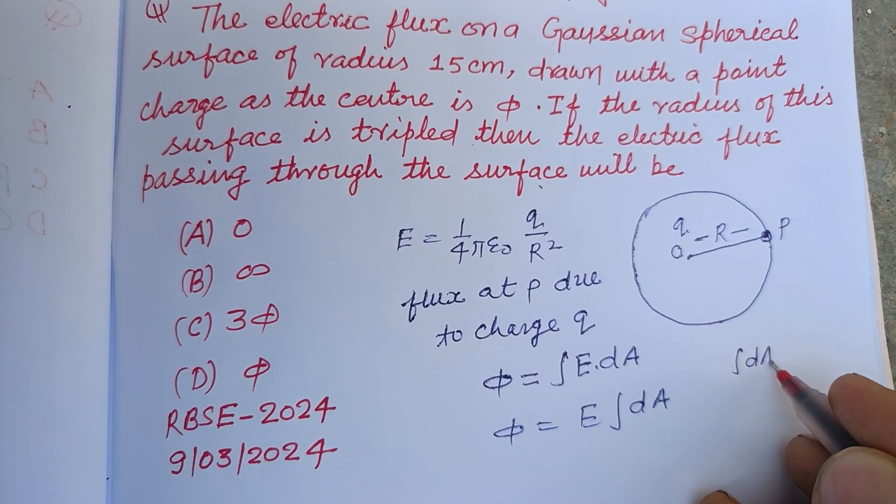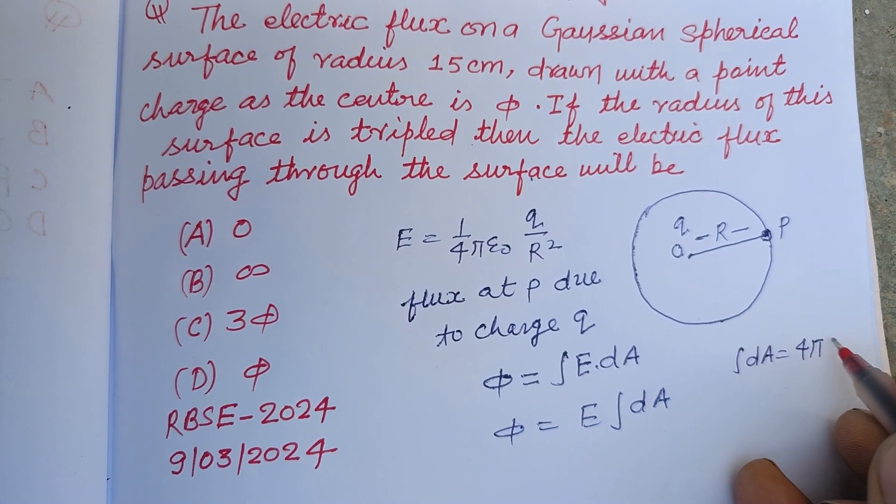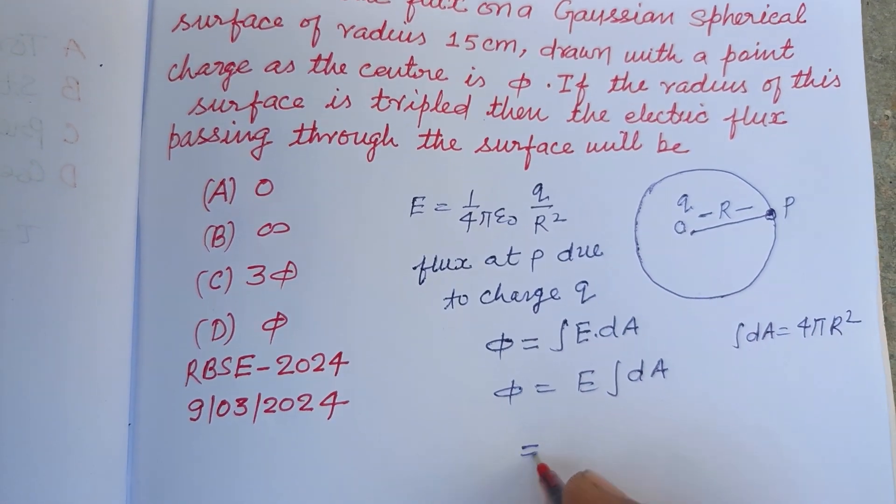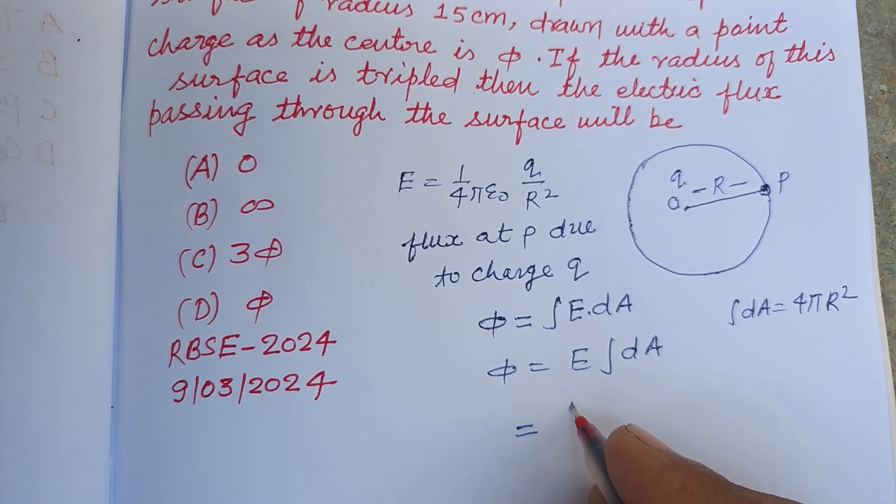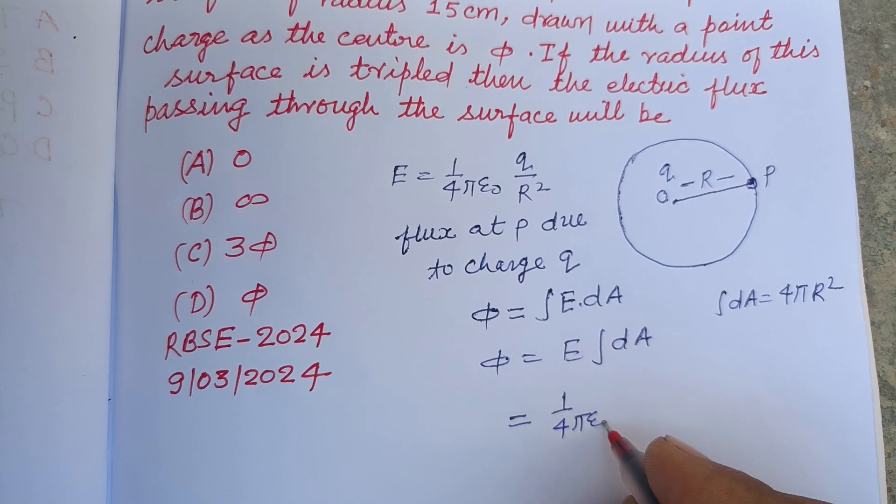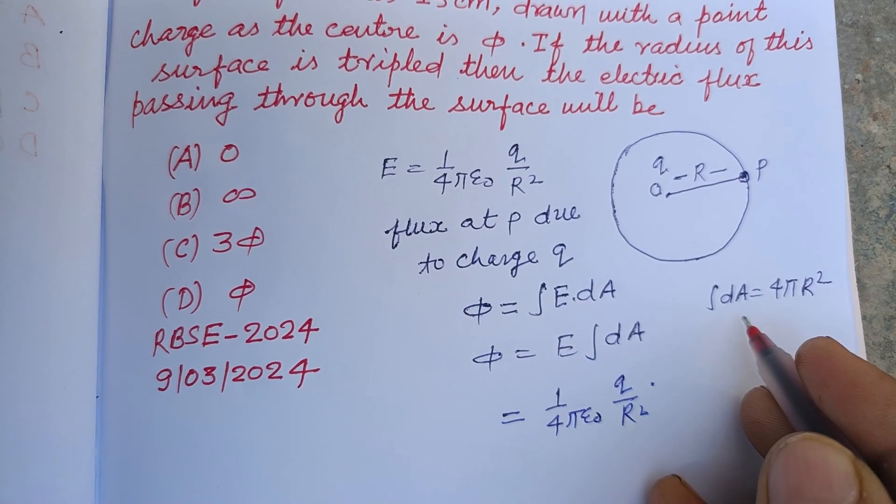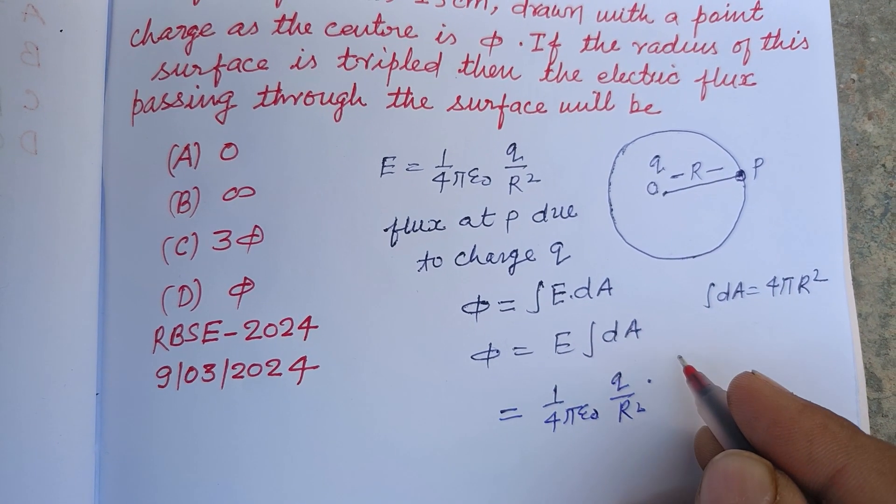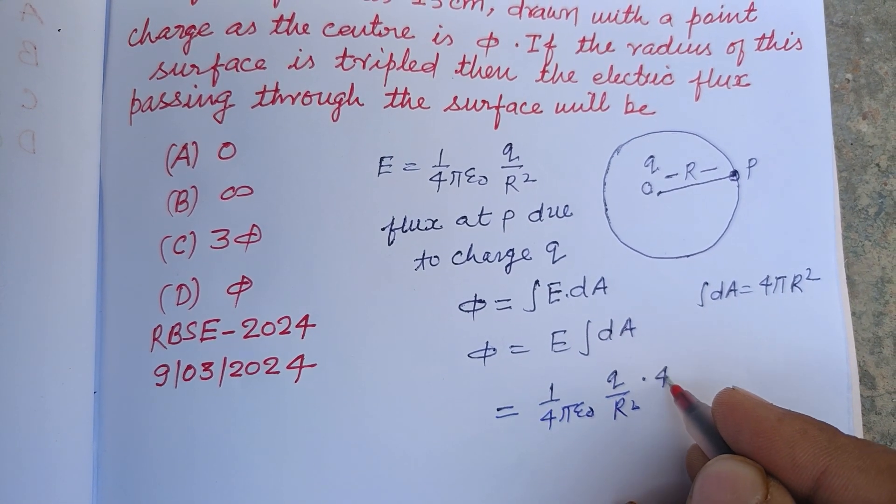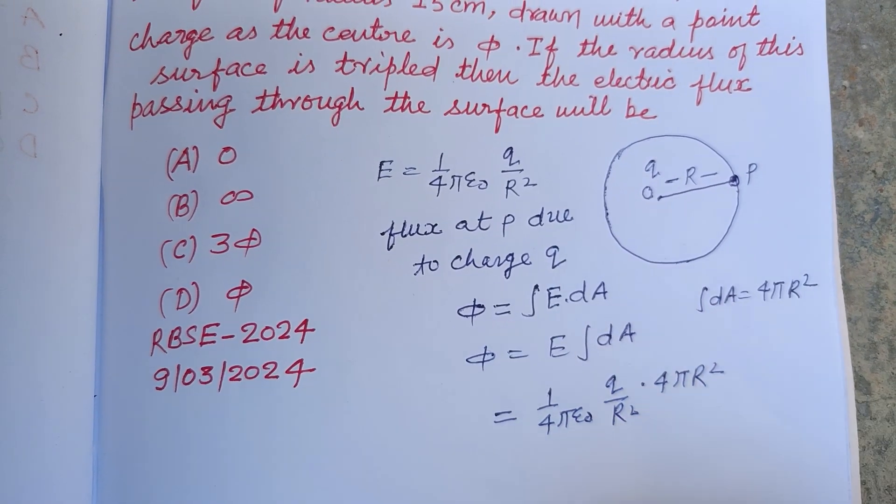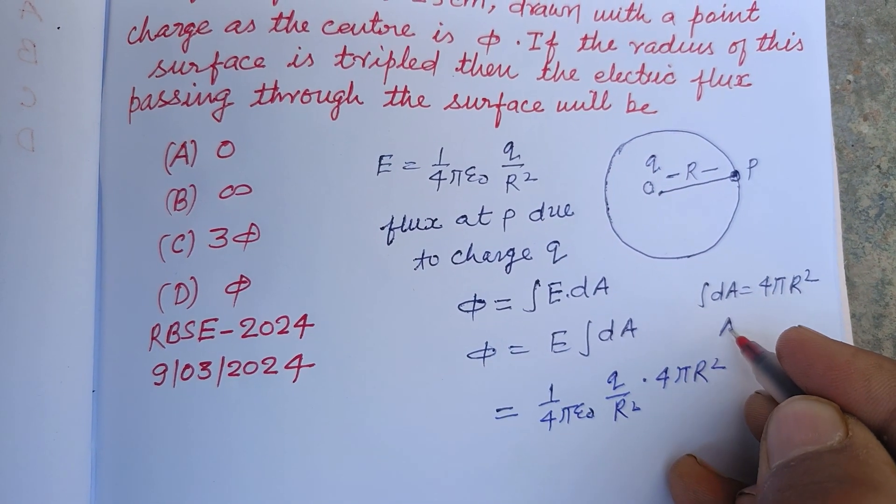Integration of dA gives the total surface area, which is 4πR². Therefore, putting the value E = 1/(4πε₀) × Q/R², and A = 4πR², because the surface area of a sphere is 4πR².